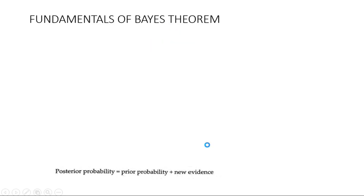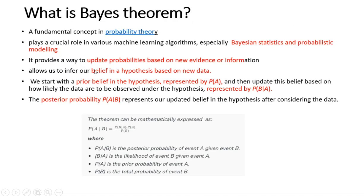So P(A|B) is the posterior probability, P(B|A) is the likelihood probability, and P(A) is the prior probability. Basically, Bayes theorem is all about these three probabilities: prior probability, likelihood probability, and posterior probability.